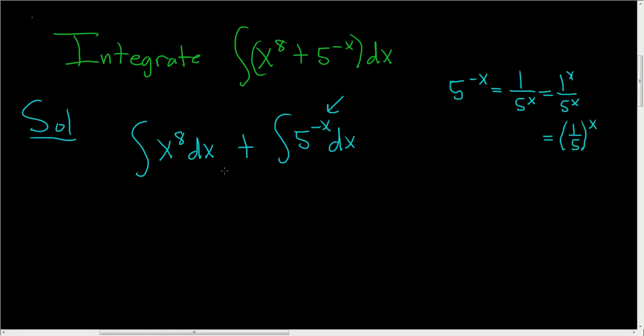So let's rewrite this. We have the indefinite integral of x to the 8th with respect to x plus the indefinite integral of 1 over 5 to the x with respect to x. And now we're ready to use formulas.